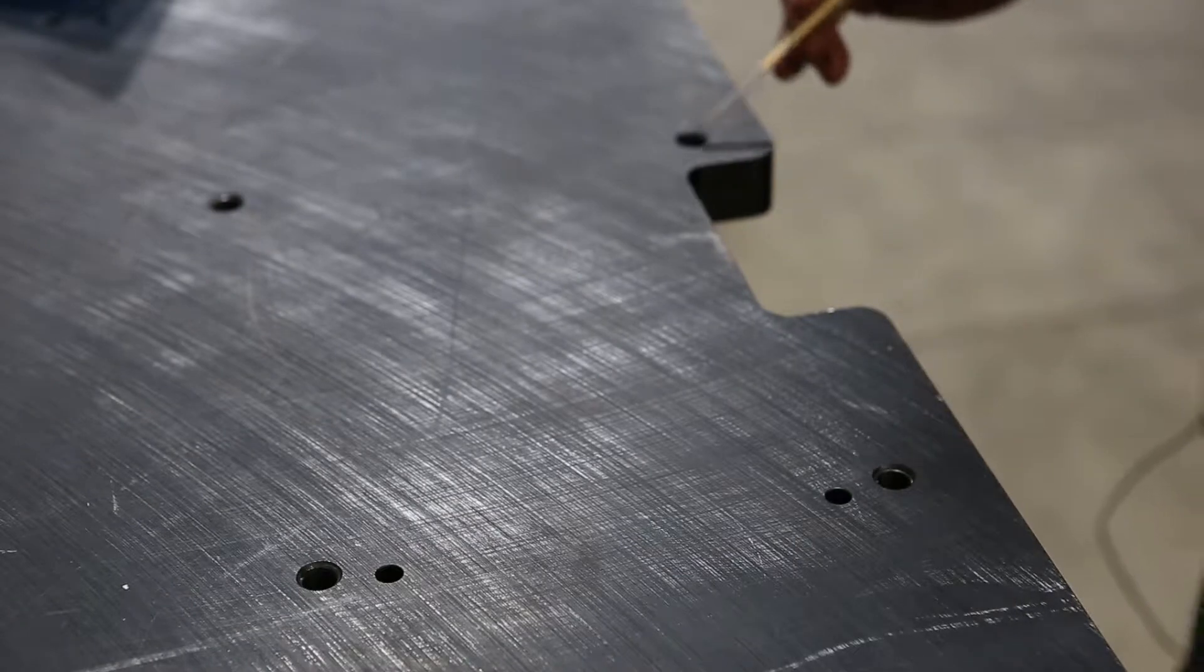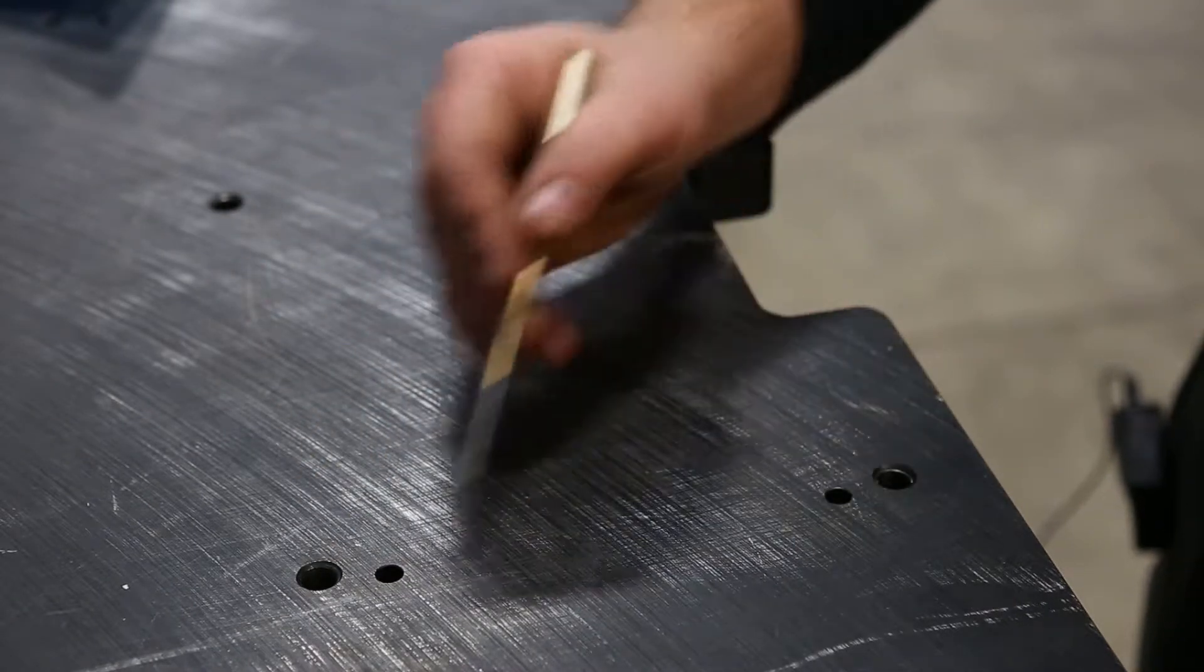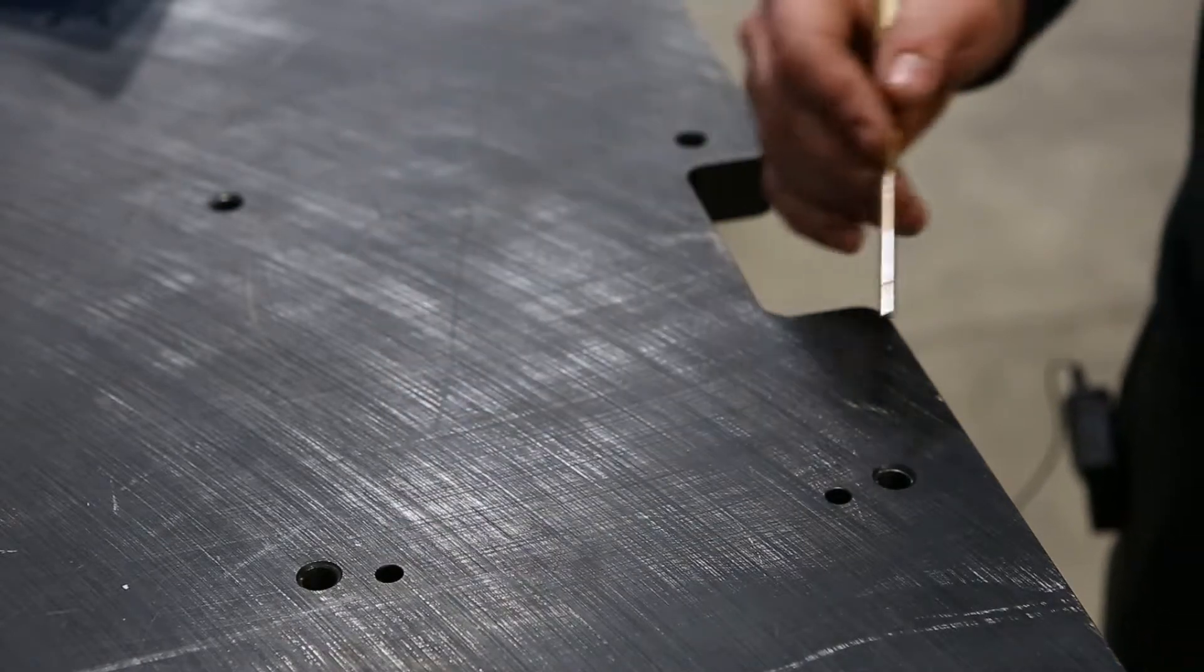You can see four threaded holes to bolt down your indexing table and you can see two pin holes for your parallel pins for location.